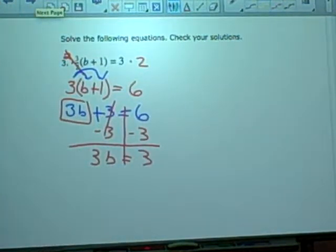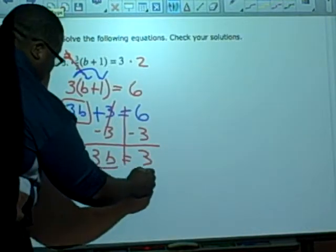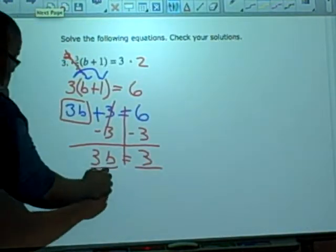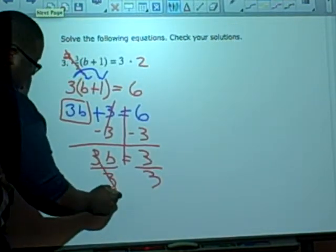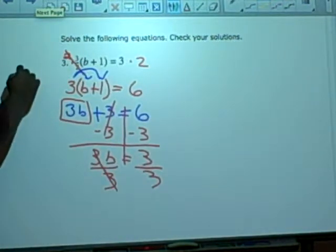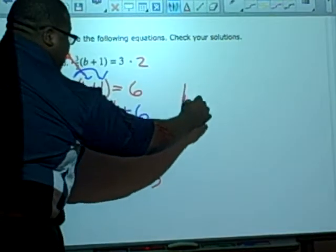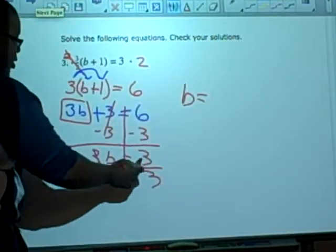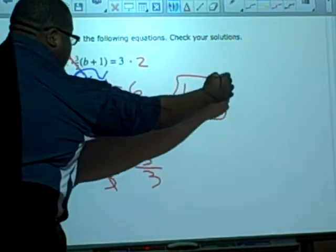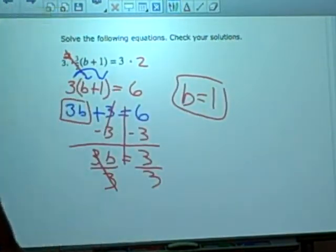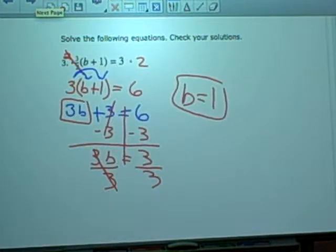My last step asks for me to do what? Divide. And I'm going to divide by the coefficient which is three. What happens to these? They cancel and I end up with B equals, what is three divided by three? One. Are there any questions? You did a good job there.